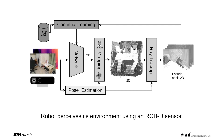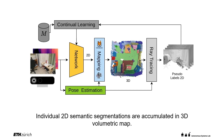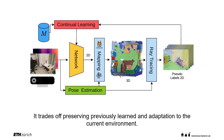A robot perceives its environment using an RGBD sensor. An initial semantic segmentation is predicted from the captured 2D images. Precise camera poses are estimated using an RGBD SLAM system. Individual 2D semantic segmentations are accumulated in a 3D volumetric map. We can now ray-trace the map to generate pseudolabels. An experience replay continual learning strategy is used to update the parameters of the neural network, trading off preserving previously learned knowledge and adaptation to the current environment.